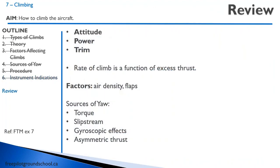So let's review. The procedure for a climb is Attitude, Power, Trim. The rate of climb is a function of excess thrust. The factors that affect climb performance are air density and flaps. And the sources of yaw are torque, slipstream, gyroscopic effects, and asymmetric thrust. That concludes this lesson on climbs. Thanks for joining me — we'll see you in our next lesson on descents.